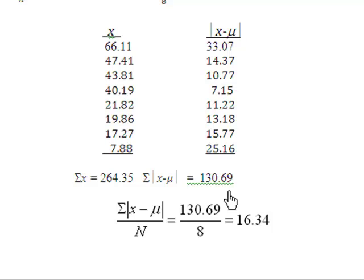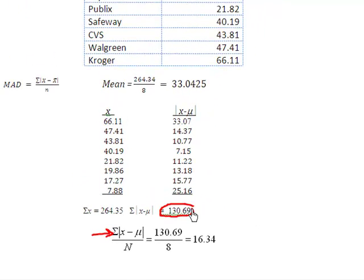So 16.34, hopefully everybody's math agrees with mine. It's the sum of the distance each individual value falls from the mean, added together. So that 130.69 divided by n, which was 8, gives me 16.34 for the value of my mean absolute deviation. So what we now know about our data set is it has a range of 58.23, it has a mean absolute deviation of 16.34, and it has an interquartile range of 27.045. So I will be back with you on the next video with variance and standard deviations. See you then.